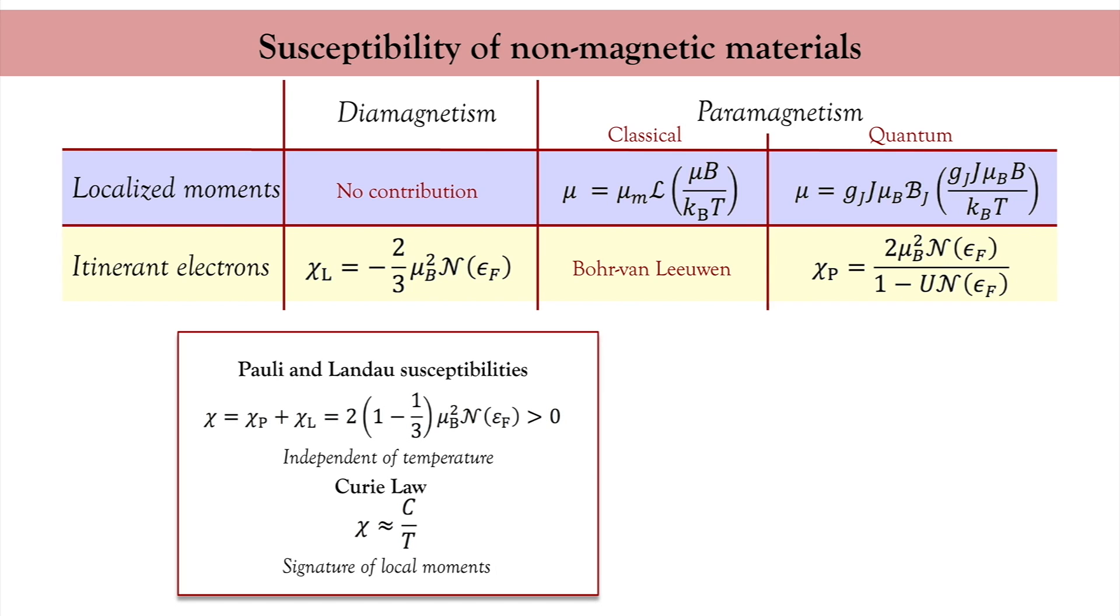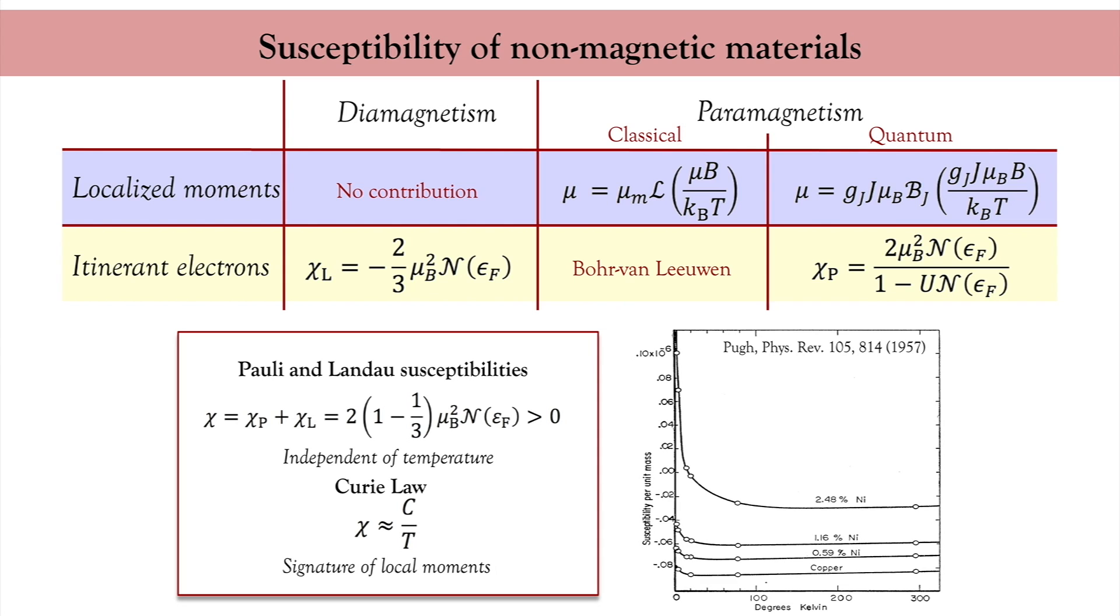In a real material, one expects the contribution from all these sources. I give here an example of such a measurement. In this experiment, the authors take copper and dope it progressively with nickel impurities. You see that in the absence of nickel, copper displays a negative susceptibility, that is to say diamagnetism, which is constant as a function of the temperature. This is because the electrons are highly itinerant, and therefore Landau diamagnetism dominates. Upon increasing the content of nickel, the susceptibility becomes positive and progressively shows the 1 over T dependence of Curie law. When you add nickel impurities, you add localized spins that will produce Brillouin paramagnetism that tends to dominate over diamagnetism.